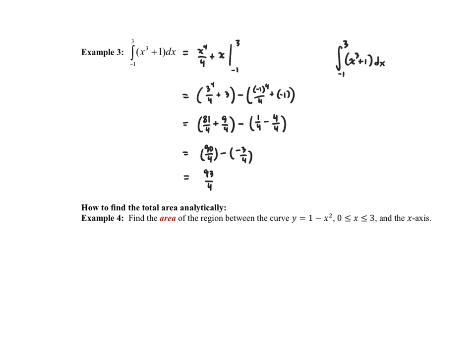So 3 to the 4th is 81, giving 81 fourths plus 9 fourths, minus 1 fourth minus 4 fourths. With a common denominator that's 90 fourths minus negative 3 fourths, which equals 93 fourths — or 23 and a quarter.